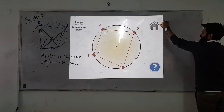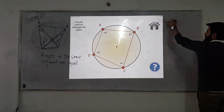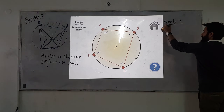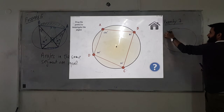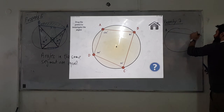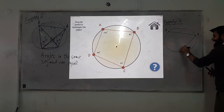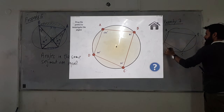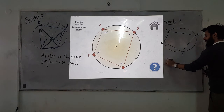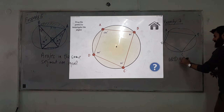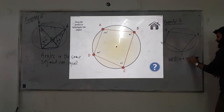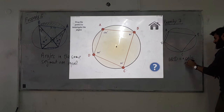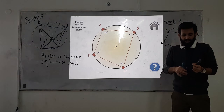What about this shape ABCD? Is it just a quadrilateral or a special one? It's a special quadrilateral — a cyclic quadrilateral. Why is it cyclic? Because all its vertices lie on the circle.